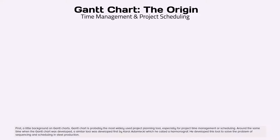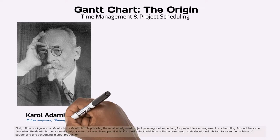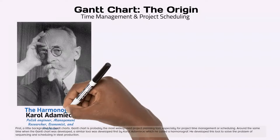Around the same time when the Gantt chart was developed, a similar tool was developed first by Karol Adamiecki which he called a harmonograph. He developed this tool to solve the problem of sequencing and scheduling in steel production.